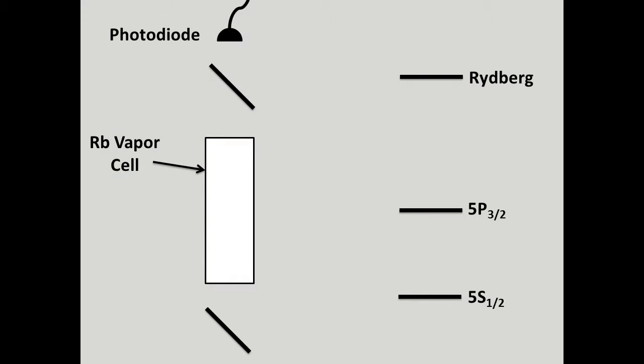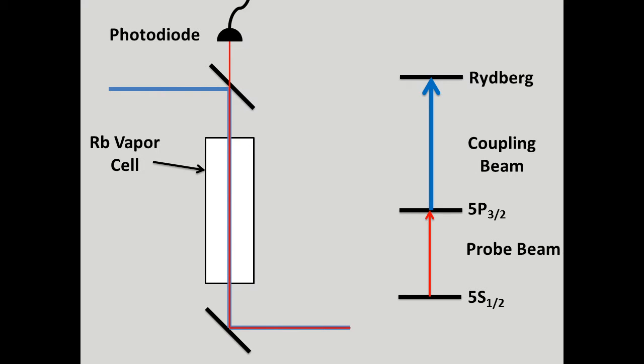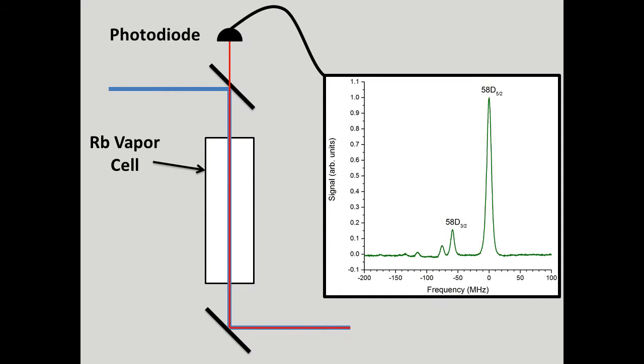Here we see a schematic of our experimental setup. At the center of the setup is a vapor cell filled with, in our case, rubidium atoms. In the cell, there are two counter-propagating beams that drive the atoms to an excited state, known as a Rydberg state. When the lasers are adjusted to the appropriate frequencies and powers, a frequency window is produced for the probe beam, resulting in the signal you see here.